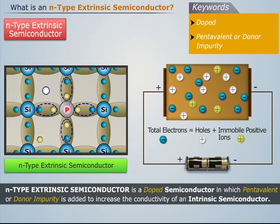When an external DC voltage is applied to this N-type extrinsic semiconductor, we see that the free electrons move towards the positive terminal of the source, and holes move towards the negative terminal.